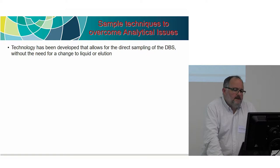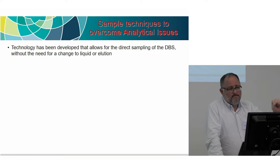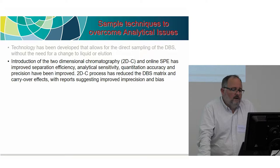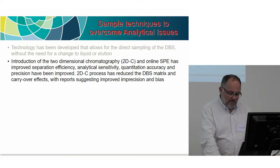How do we overcome these techniques? Can we do direct sampling of the dry blood spot with no need for elution — eluting straight from the dry blood spot into the mass spec? Two-dimensional chromatography or online SPE will hopefully enable us to clean up the sample and remove many interfering compounds, so when we inject we cut in exactly what we want and remove a lot of the suppression issues.